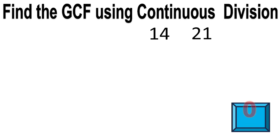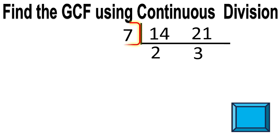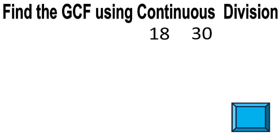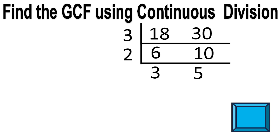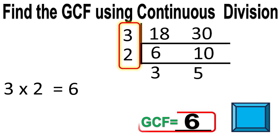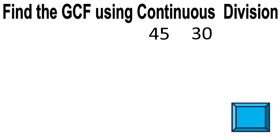Times up. The answer is 7. Next: 18 and 30. Times up. The answer is 3 times 2 equals 6. The greatest common factor is 6. Next: 45 and 30.